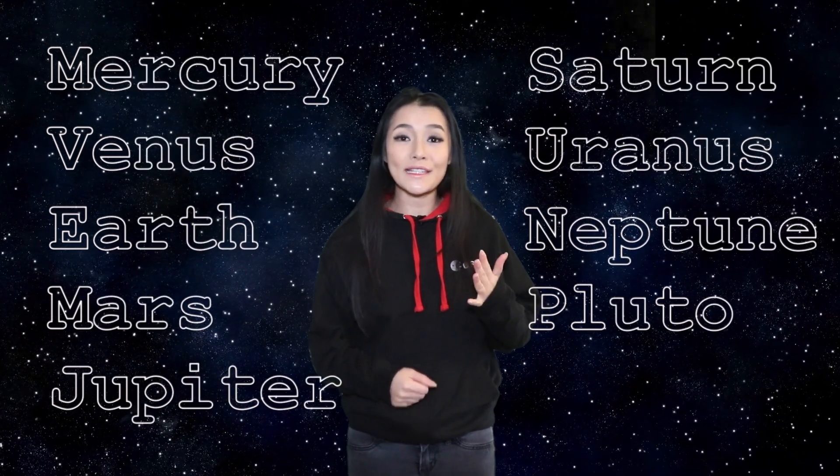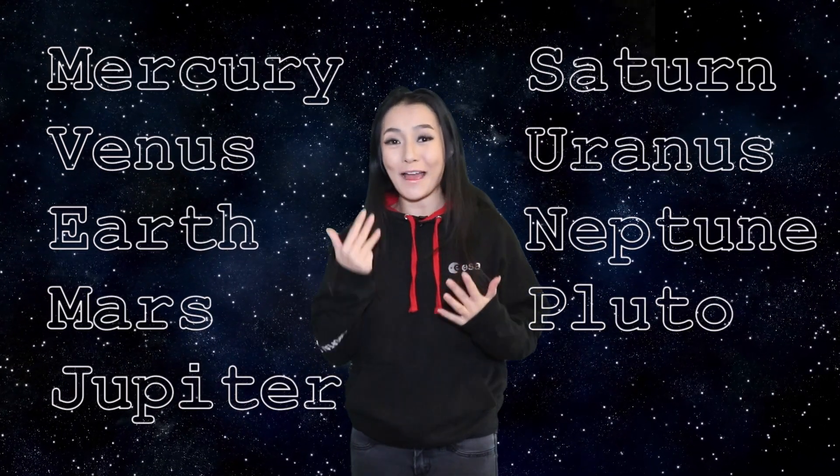Or in other words, Mercury, Venus, Earth, Mars, Jupiter, Saturn, Uranus, Neptune and Pluto. There were nine planets in our solar system.